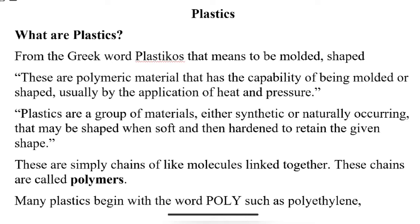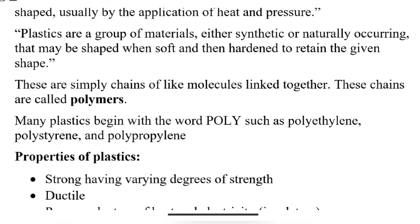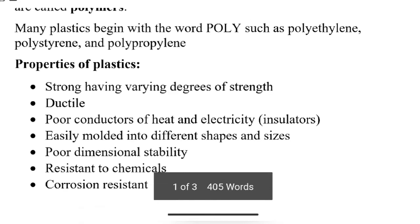Plastics are simply chains of like molecules linked together. We discussed polymerization in a previous lecture. These are polymers — different molecules linked together to form one big molecule. We have many names: polyethylene, polystyrene, polypropylene, polyester. 'Poly' means many — many molecules linked together to form simple chains, linear structures, or network structures. These are what we call polymers, and they are our plastics.